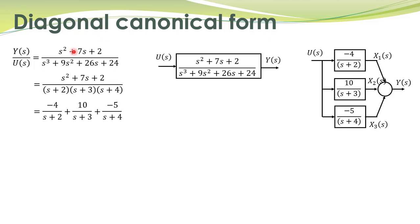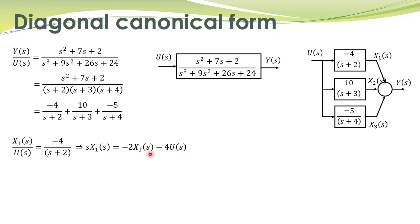What we have done is obtained the partial fraction expansion of this transfer function and represented it in a block diagram, giving these signals new names x1, x2, and x3. That is, x1/u is given by this transfer function, which can be rearranged to write it in this particular form. Simply, s·X1(s) is written on one side, and 2·X1(s) is brought to the right-hand side with −4·U(s) written here.